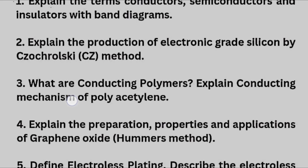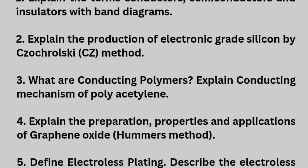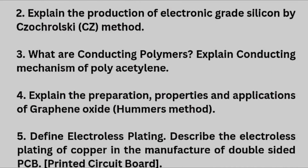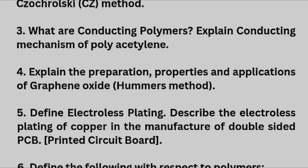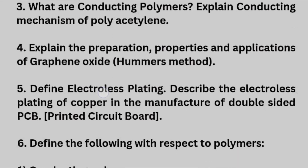Next we have: explain the production of electronic grade silicon by the CZ method. And next: what are conducting polymers? Explain the conducting mechanism of polyacetylene. If somebody wants to pass the chemistry subject, it is possible by covering the theoretical portion, but you have to go for the numericals also if you want to score. That is why I have taken all modules into consideration so you can cover all the important questions.